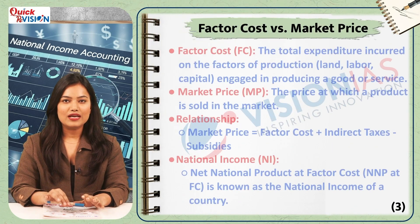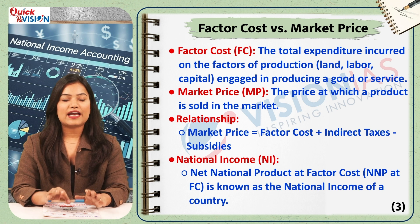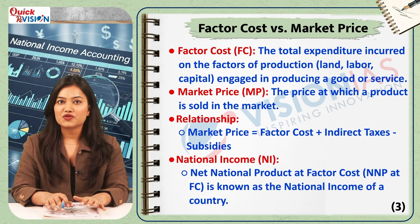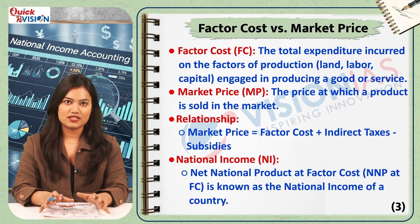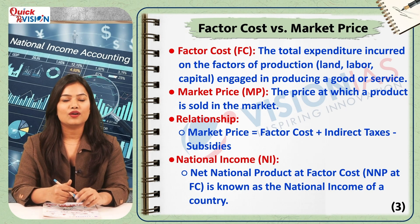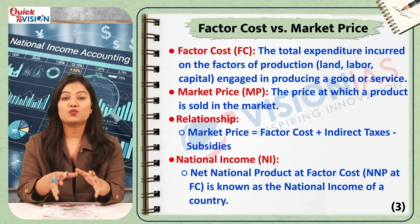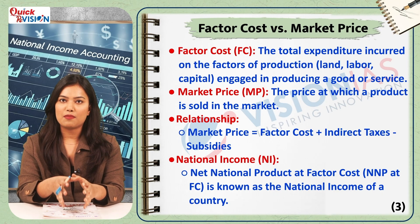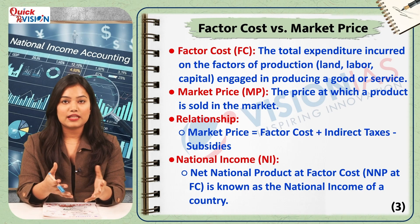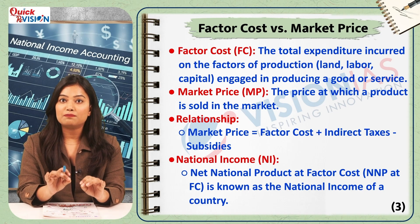Now let's understand two more important concepts: factor cost and market price. Factor cost is the actual cost of production of a commodity, which includes wages, rent, interest and profit. On the other hand, market price is the price at which a product is sold in the market. Market price includes indirect taxes imposed by the government and excludes subsidies provided by the government.